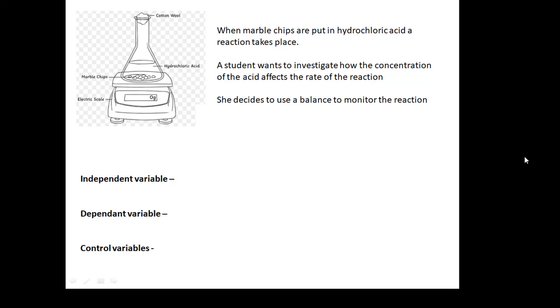Here's another one for you to have a think about. If you put marble chips in hydrochloric acid, calcium carbonate, in hydrochloric acid, a reaction takes place. A student wants to investigate how the concentration of the acid affects the rate of reaction. She decides to use a balance to monitor the reaction, so she's measuring the mass. What's our independent variable? Our dependent variable, control variables. Pause the video, scribble down some ideas.